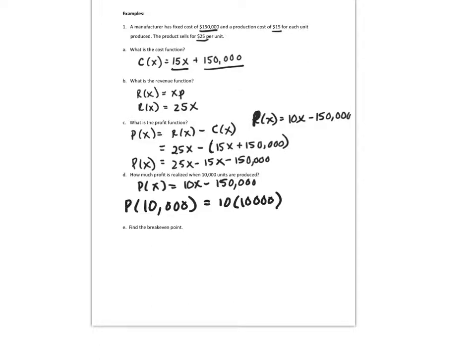That's 10 times 10,000. Minus $150,000. So that's going to be, that's $100,000 minus $150,000, which is, they're not making money yet. Negative $50,000.